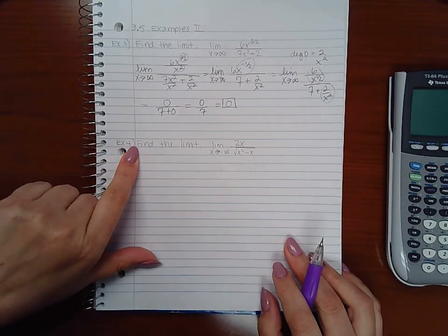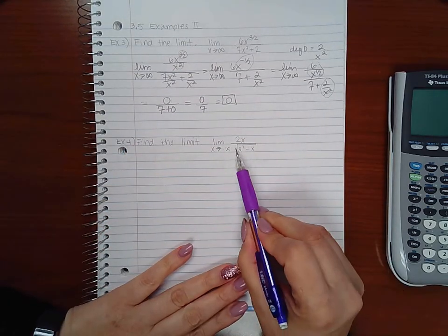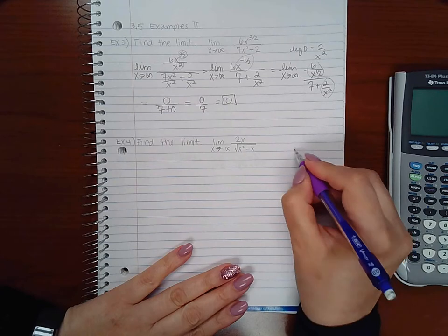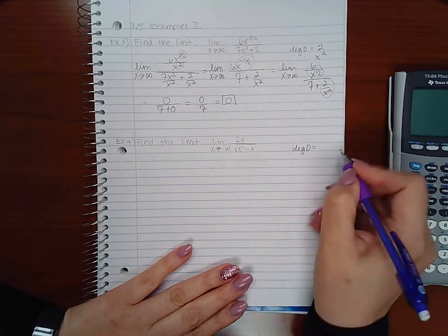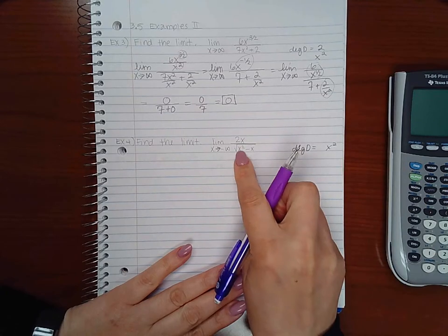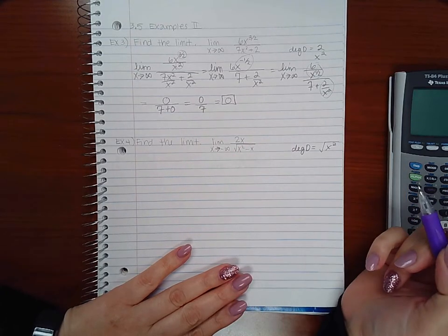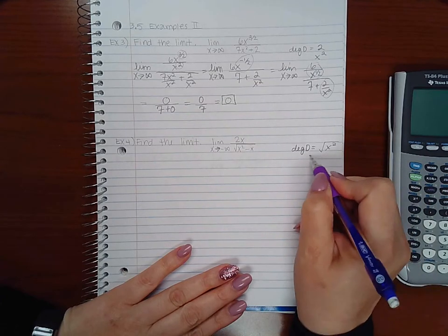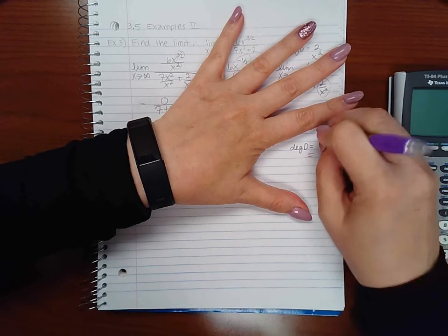Now we have the fourth example. So here we have to be careful, because notice you have a square root. So if you want to figure out the degree of the denominator, you do have to take the x squared term, because its degree is higher than this. But you also have to factor in that there's a square root in there.